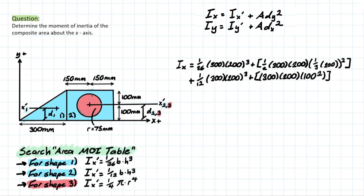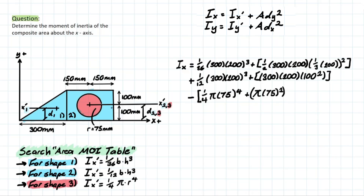Moving on to the final shape, we remember that this is a hole, so we have a subtraction. We find the local moment of inertia for the circle: (1/4) × π × (75 mm)⁴. Then we add the area — π × 75² — multiplied by that same distance of 100 mm squared. d2 and d3 are exactly the same because the center of the circle lands exactly on the center of the rectangle, which simplifies the problem.